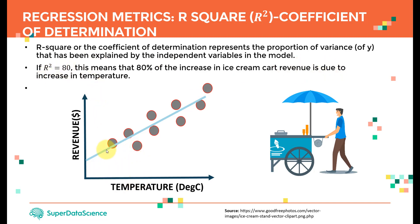This is a very important element. I selected only one independent variable — temperature — and I'm tracking revenue changes. R-square gives me an insight: when R-square equals 80, that means 80% of any increase in revenue is due to that specific independent variable, temperature. R-square can range from 0 up to 100%, or from 0 to 1.